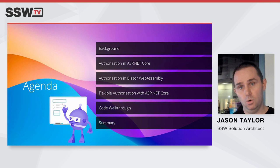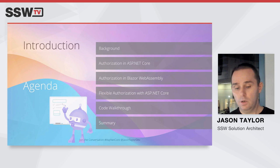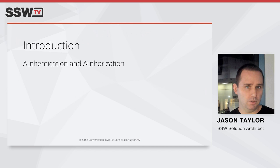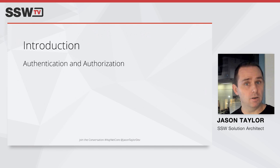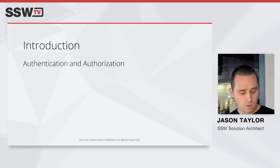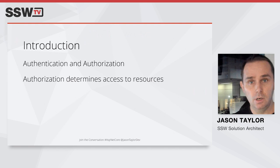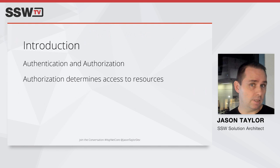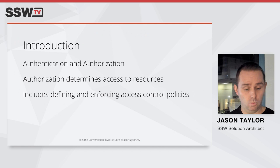A little bit of background before we get started. Authentication is the process of determining the user's identity, while authorization is the process which determines which resources a user can access. Authentication is independent of authorization, but authorization requires an authenticated user. Authorization determines access to resources — which could be a file, a feature, or some data. It includes defining access control rules as policies used by the system to grant or reject access to resources.